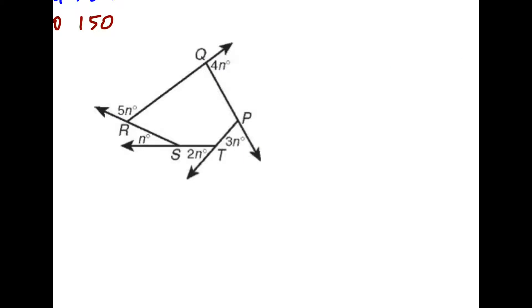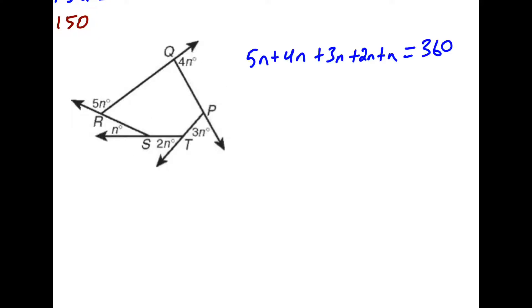For number ten, we're looking at the exterior angles. So unlike the interior, where we use n minus 2 times 180, the sum of the exterior angles is always going to be 360, regardless of the number of sides. So we set up our equation by adding together all the respective angles and setting them equal to 360. So 15n is 360, or n is 24.